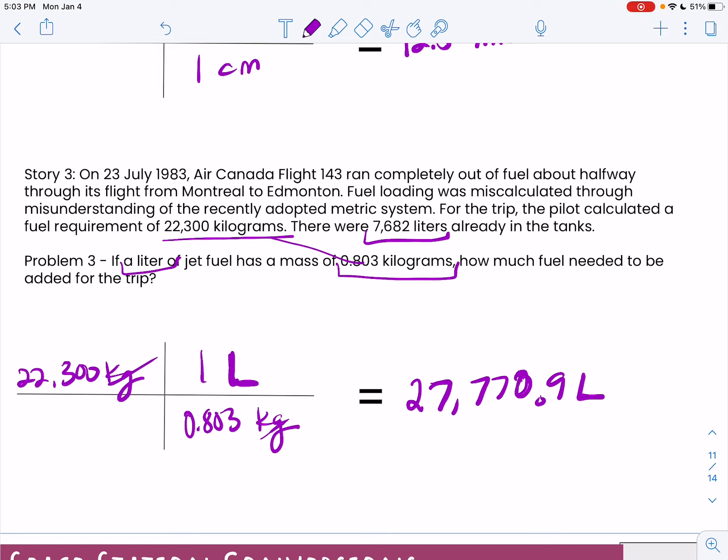And then there were 7,682 liters already in the tank. So if they already had 7,682 but I need 27,000, so minus 7,682, that would be an additional 20,088.9 liters to be added.